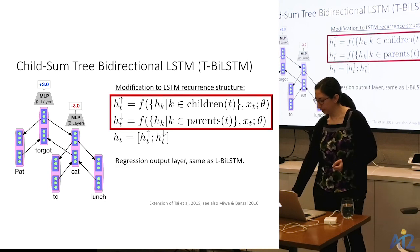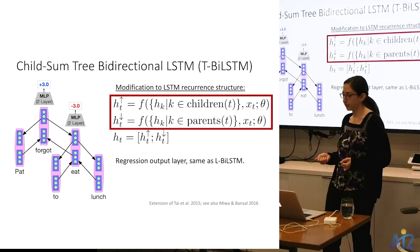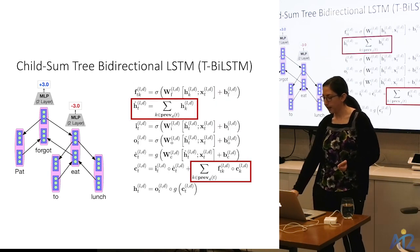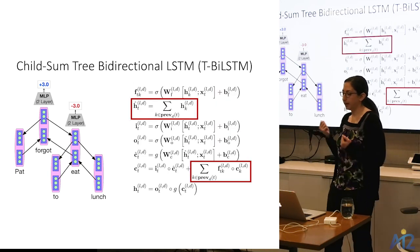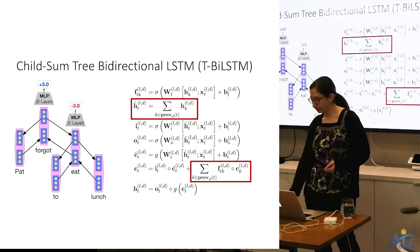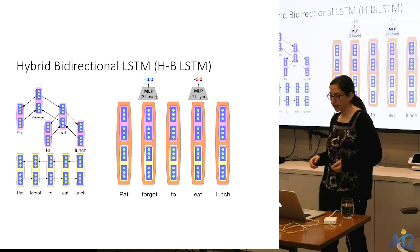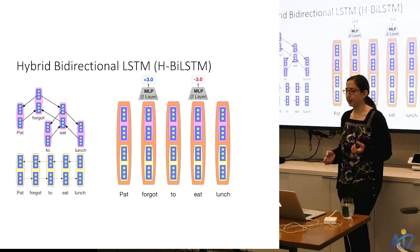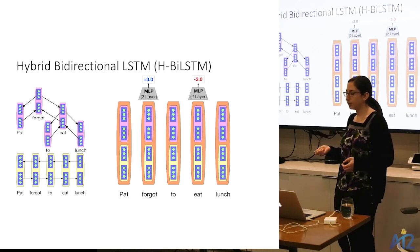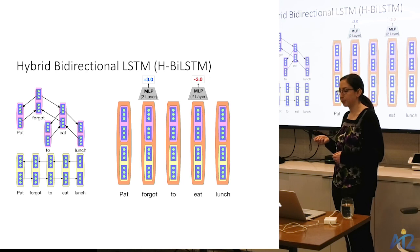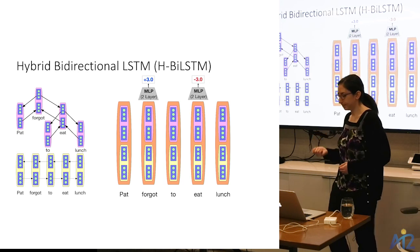The hybrid model combines both the linear bidirectional and the tree bidirectional models, concatenates the corresponding hidden states, passes that through a multi-layer perceptron, and trains the whole thing end to end. Those are the three models we try for this task.